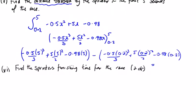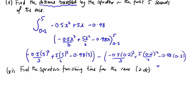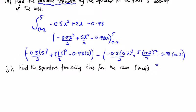Filling in values for the interval between 0.2 and 5, then integrating and putting in values and typing into the calculator, gives 36.864 metres. The question doesn't ask us to round it off, so we'll leave it at that.